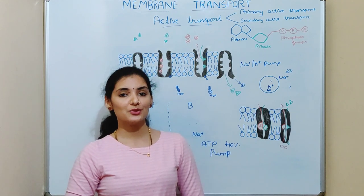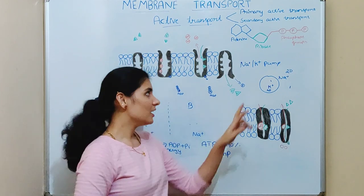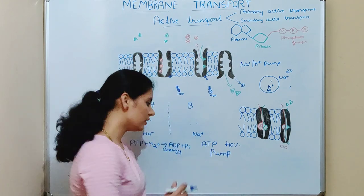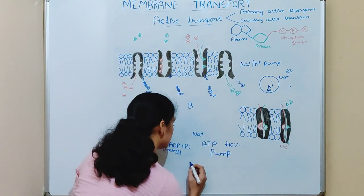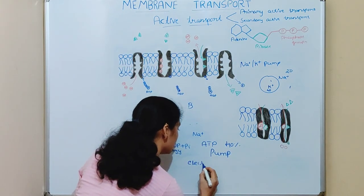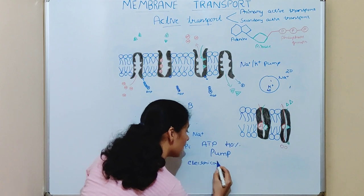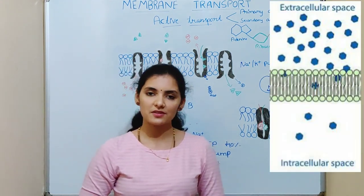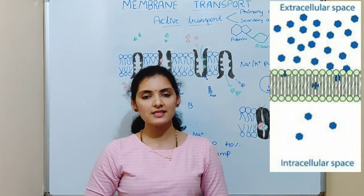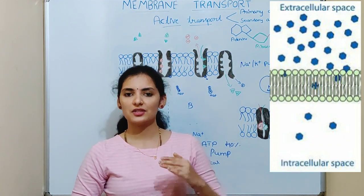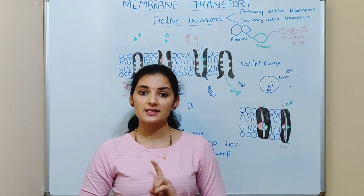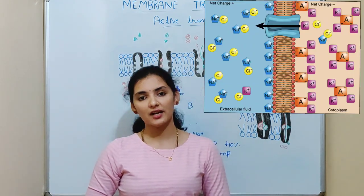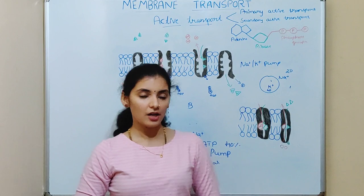Apart from maintaining sodium and potassium concentration, the sodium-potassium pump also establishes a voltage or electrical gradient. Concentration gradient means a difference in concentration in and out of the cell. Similarly, electrical gradient means a difference in charge in and out of the cell.